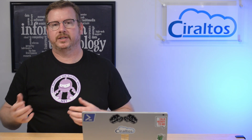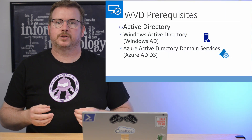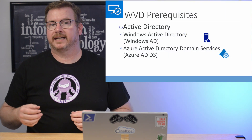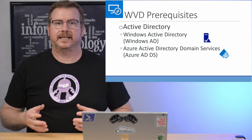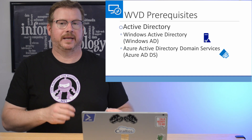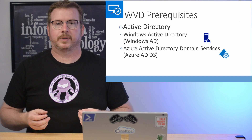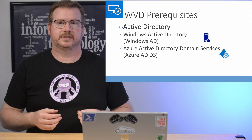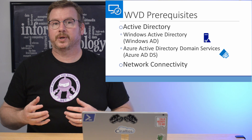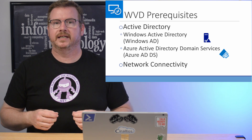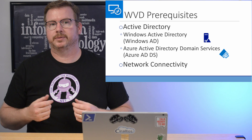Windows Virtual Desktop has prerequisites. It's not like App Services where you can deploy and then access by a web URL. If there are any problems with these prerequisites, that will cause issues with the deployment. Windows Virtual Desktop requires a working Active Directory environment — this can either be Windows Active Directory or Azure AD Domain Services. Also required is network connectivity between the session host and the version of Active Directory you're deploying to.